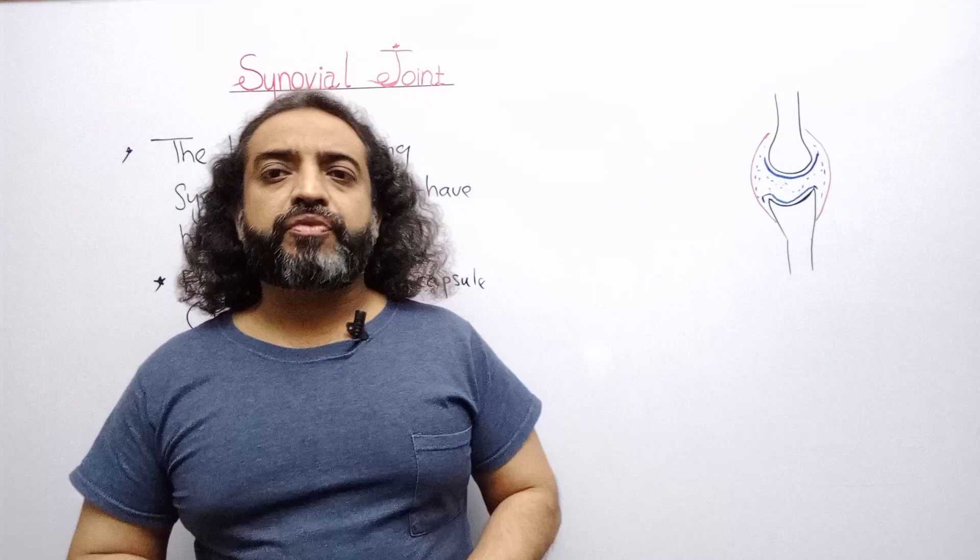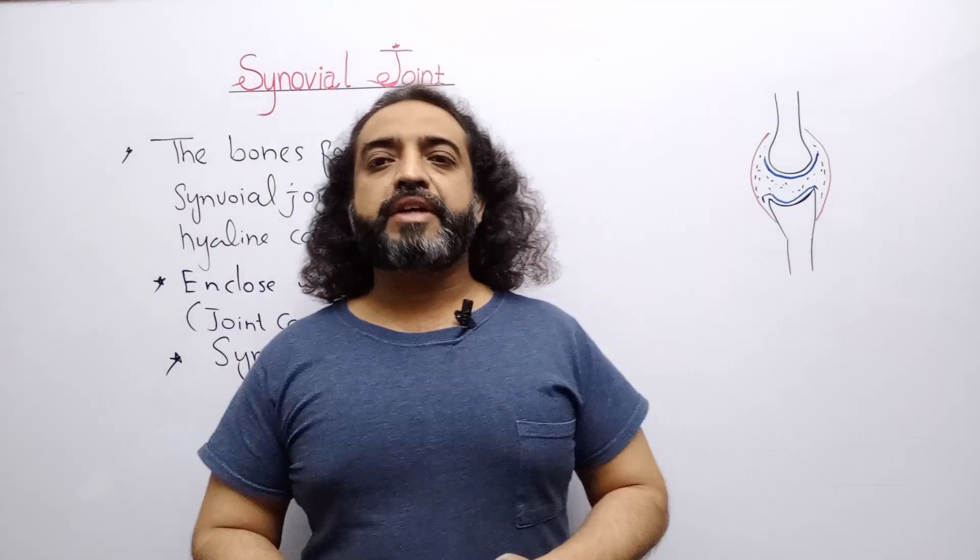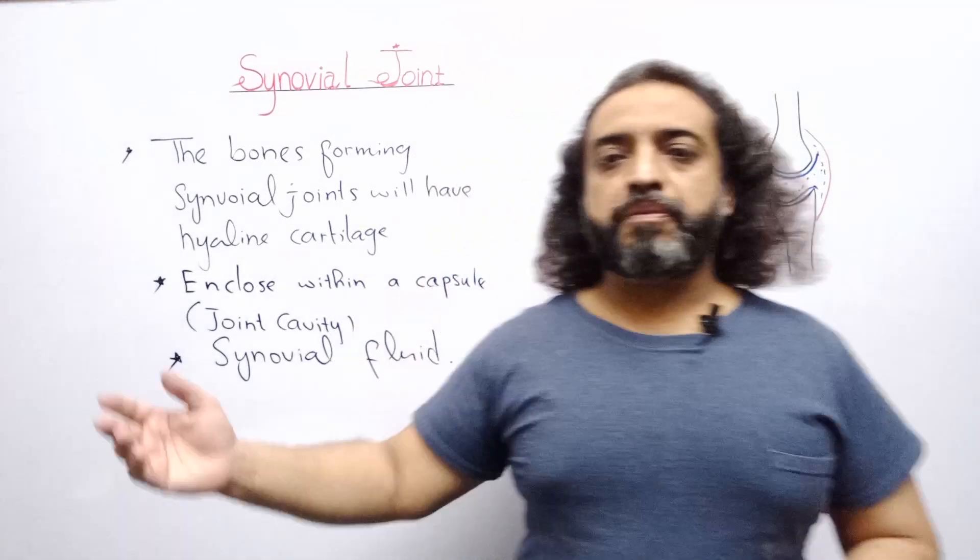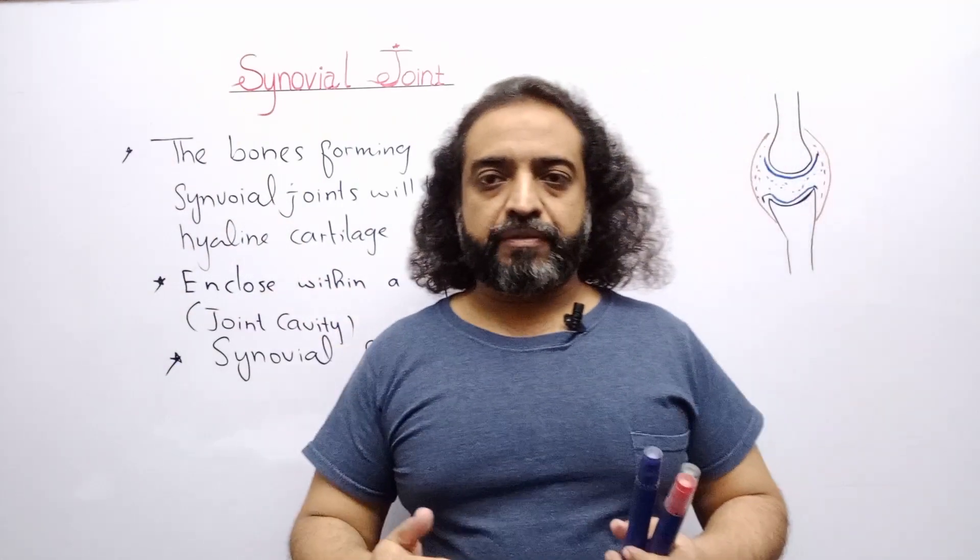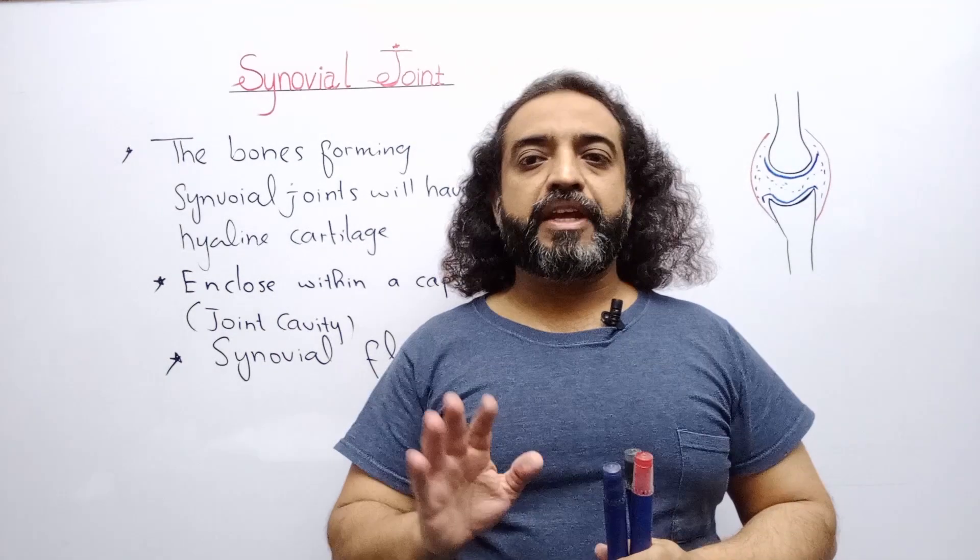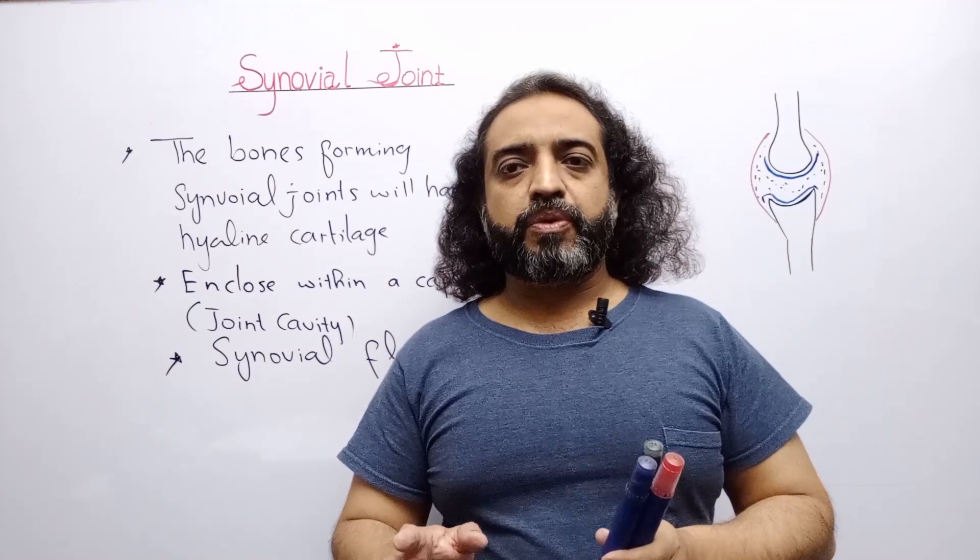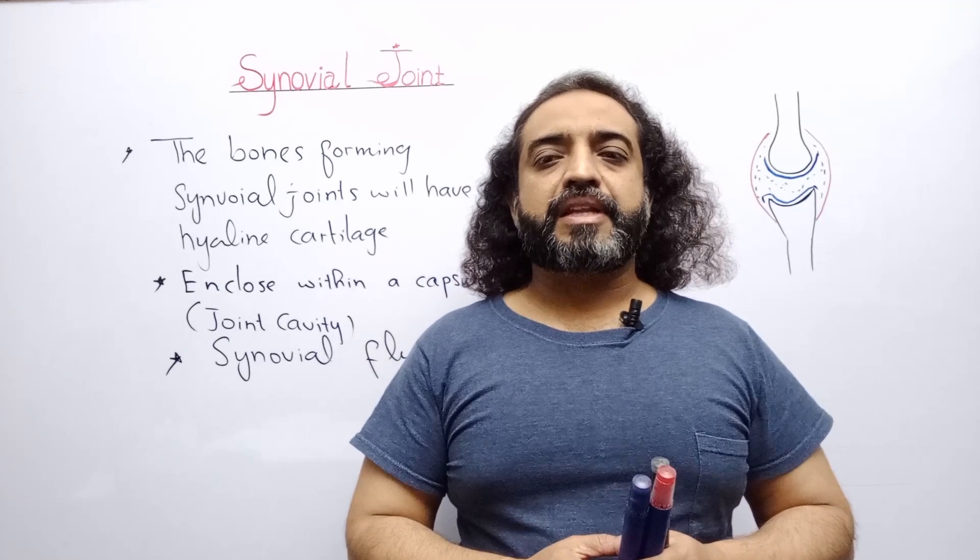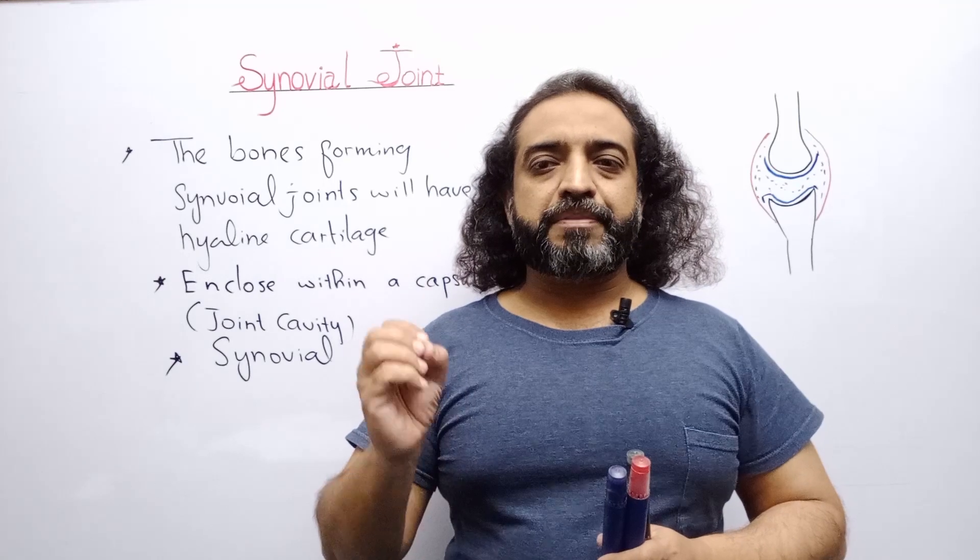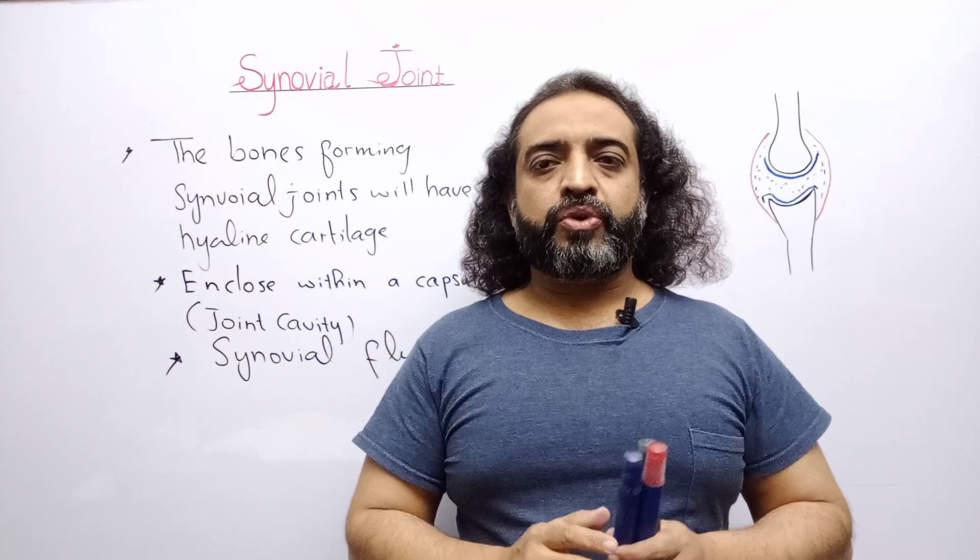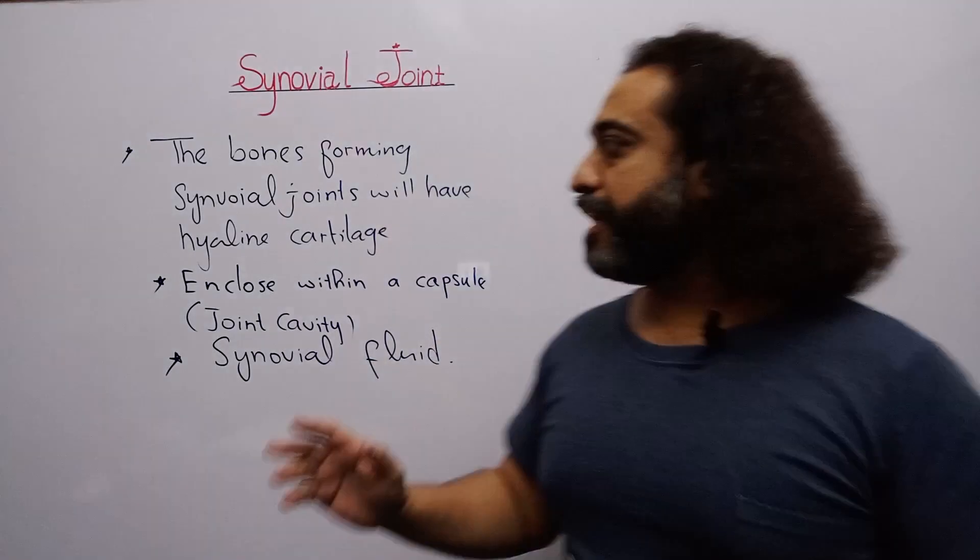Joints are of different types. They might be movable, slightly movable, or immovable. For example, when we flex on our elbow, it is a movable joint that moves up and down. But when we look at our skull, there are present in the cranium eight bones, and these eight bones, not a single bone is movable. In between, there are slightly movable bones. When we take a deep breath, our ribs slightly move.